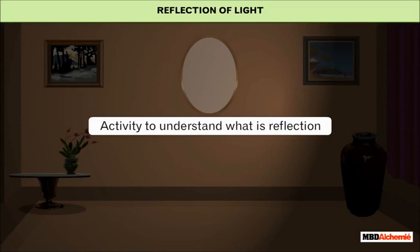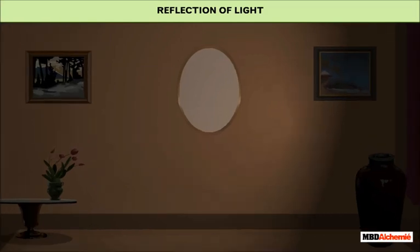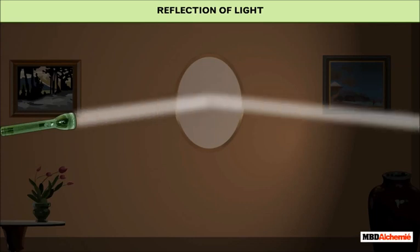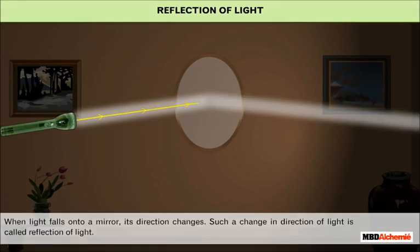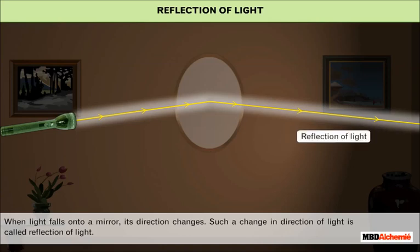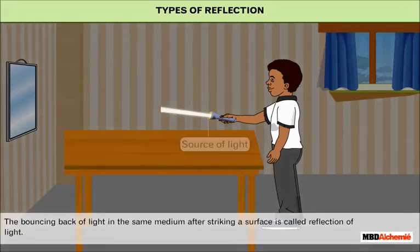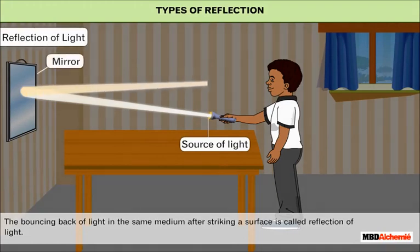Let us do an activity to understand what reflection is. In a dark empty room, shine a flashlight from the left onto a mirror. You will see a bright patch of light on the wall to your right. This means that when light falls onto a mirror, its direction changes. Such a change in direction of light is called reflection of light. Reflection of light is defined as the bouncing back of light in the same medium after striking a surface.